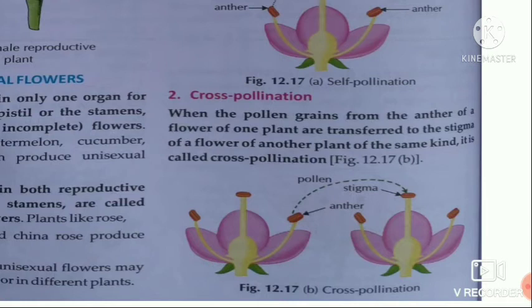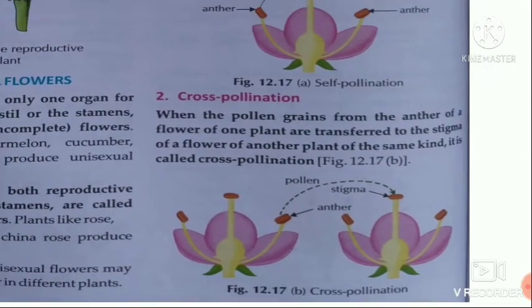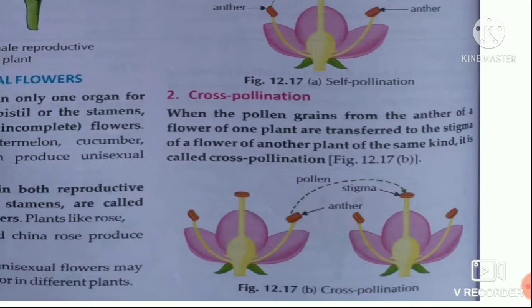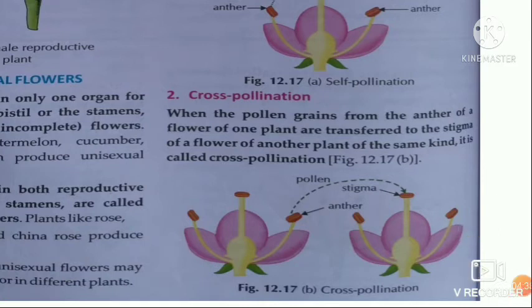The tough coat protects pollen grains from drying. Pollen grains always require some agents to carry them and release them on the stigma — to transfer them from anther to stigma. These agents may be insects, birds, other animals, wind, or water.